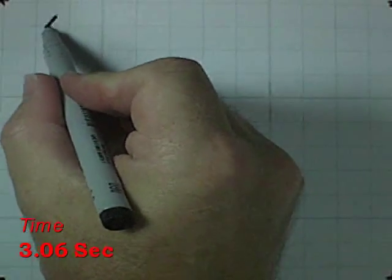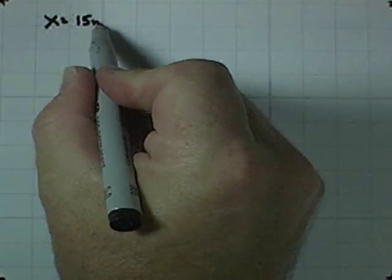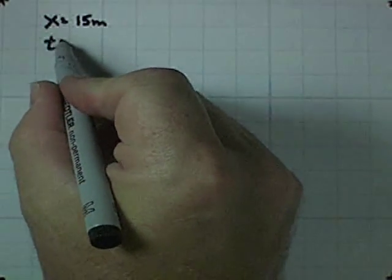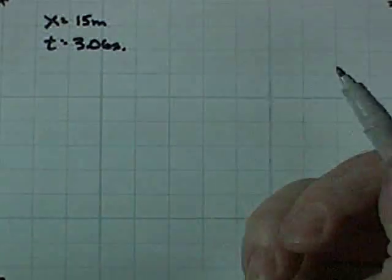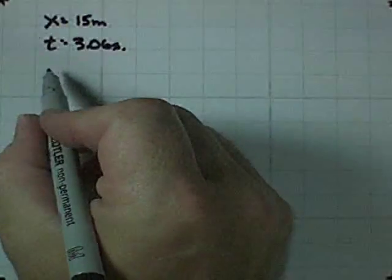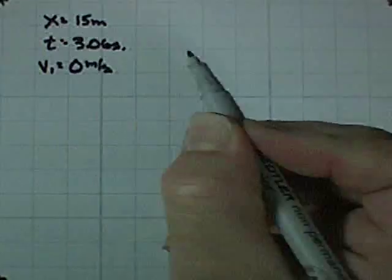Alright, let's look at the data. We travel a distance between blue line to blue line of 15 meters, and we do so in a time of 3.06 seconds. Now, we started with an initial velocity of 0 meters per second.